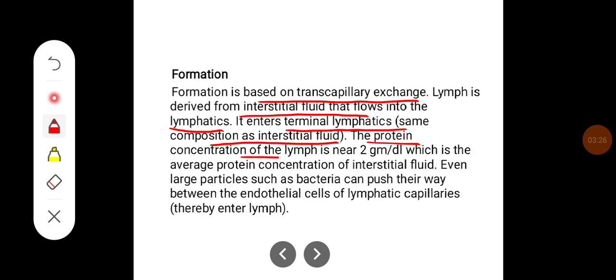The protein concentration of the lymph is near 2 grams per deciliter, which is the average protein concentration of interstitial fluid. Even large particles such as bacteria can push their way between the endothelial cells of lymphatic capillaries, thereby entering the lymph.